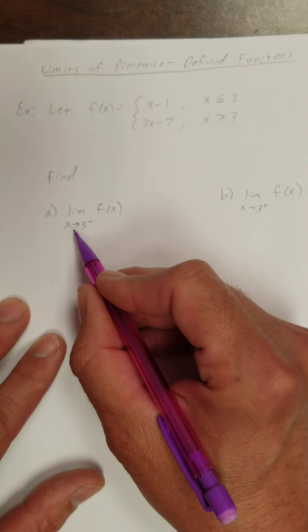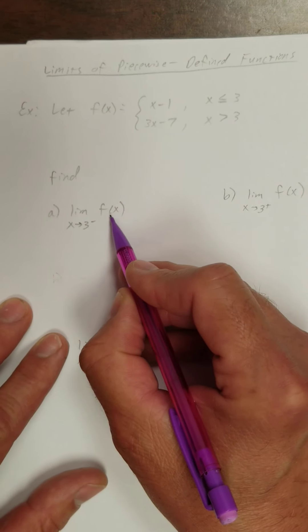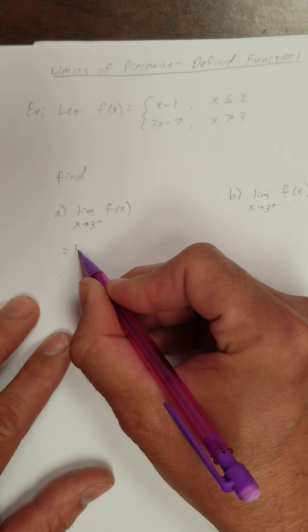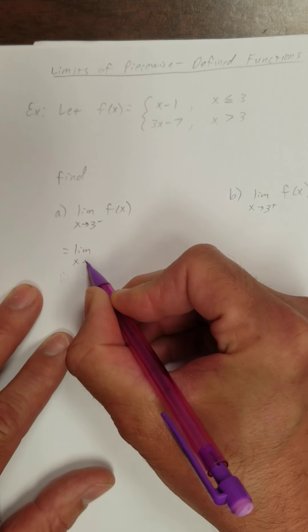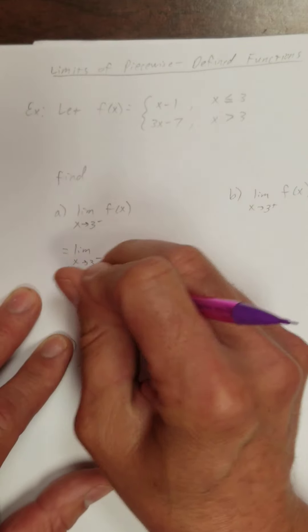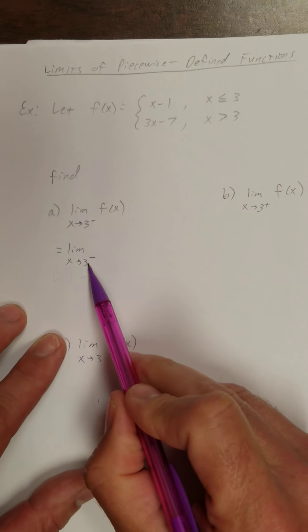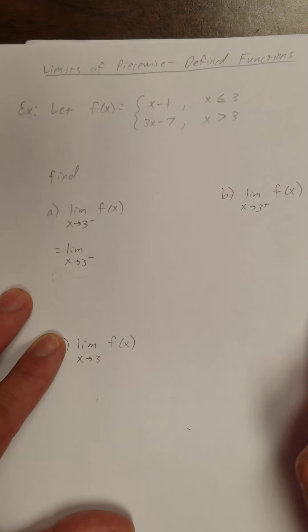Let's look at part A. Find the limit as x approaches 3 from the left. Okay, so I'm looking for the limit as x approaches 3 from the left. As I approach 3 from the left, think about this for a second.